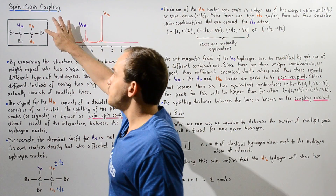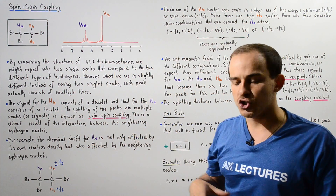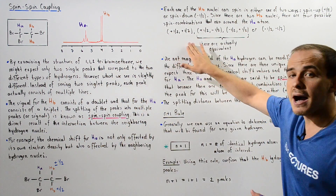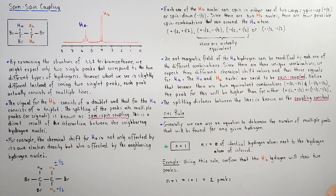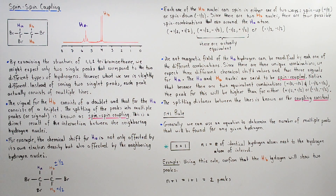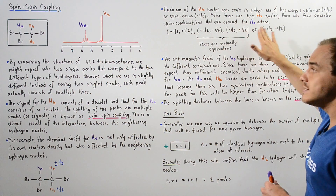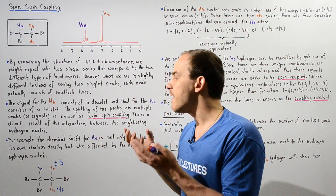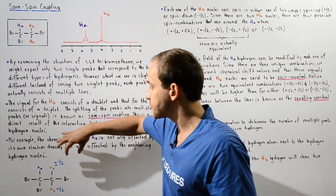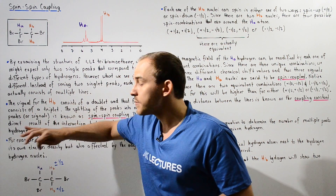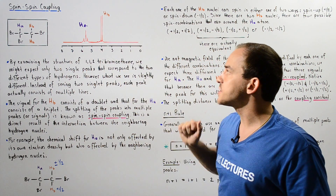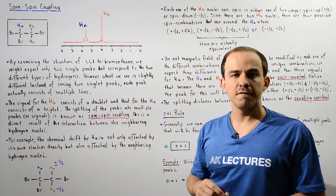In summary, spin-spin coupling occurs because the H atoms adjacent to our hydrogen of interest can spin in one of two ways. Each unique combination of neighboring spins produces its own local magnetic environment, altering the net magnetic field experienced by our hydrogen of interest. Each distinct combination corresponds to a unique chemical shift value, which is why we observe multiple peaks — each corresponding to a specific chemical shift.